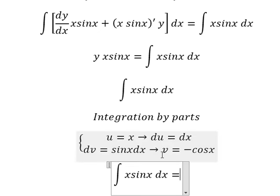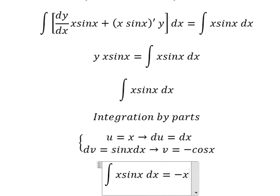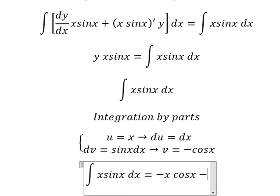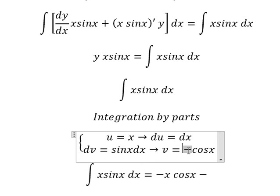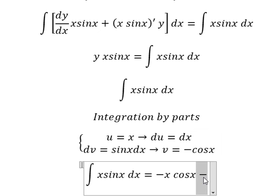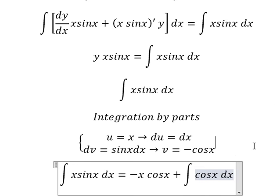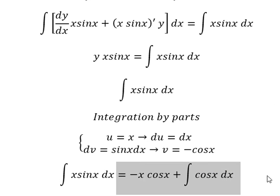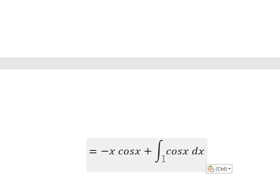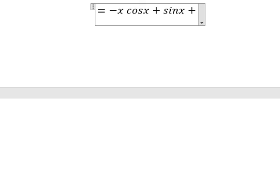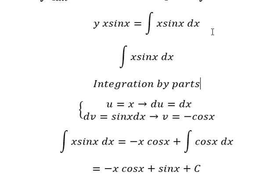So we have u multiplied by v, that is negative x cosine x minus. We have dv multiplied by v. Negative and negative, we have positive. The integration of cosine x, we have sine x. And I will put C.